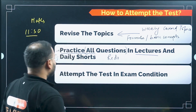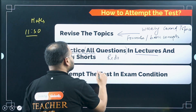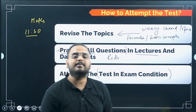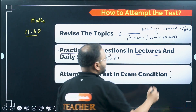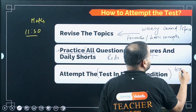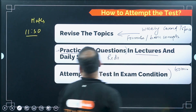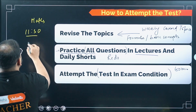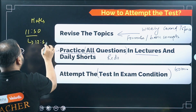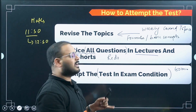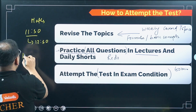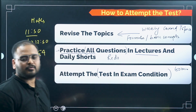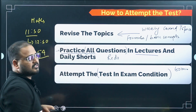Then go for the reference book. Make sure that you are attempting this exam in exam conditions — meaning time yourself. Let's say the paper is 60 minutes. If you're starting at 11:30, you solve only till 12:30. Do not take more time than that. In this one hour, let's say you solved only 54 questions out of 60 — that's okay. You will grade yourself for only those 54 questions.